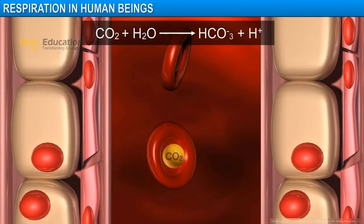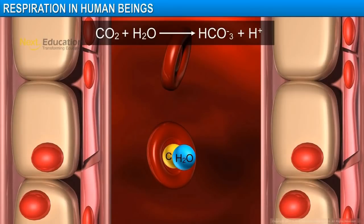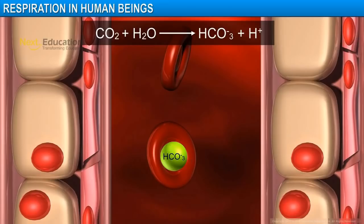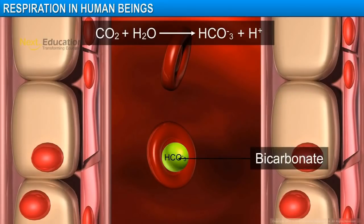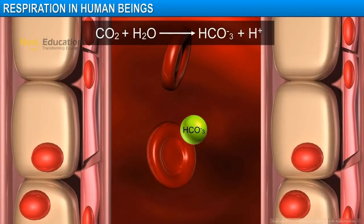The tissues in turn release carbon dioxide, which diffuses into the nearby blood capillaries. Carbon dioxide is more soluble in water than oxygen. Therefore, carbon dioxide is generally transported through blood as bicarbonate, which is its dissolved form.